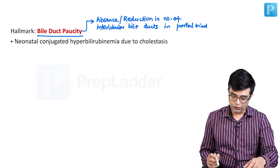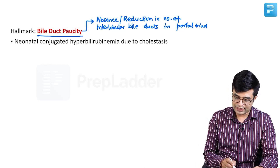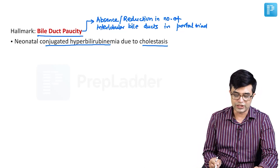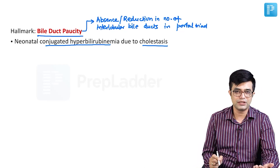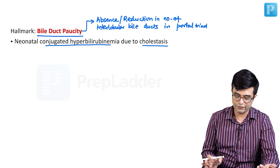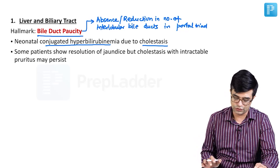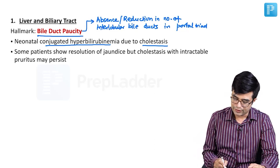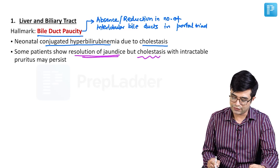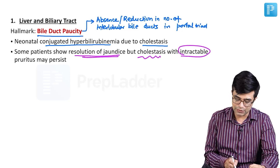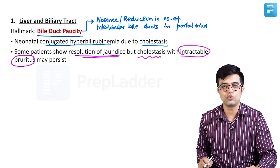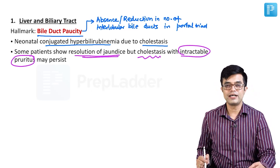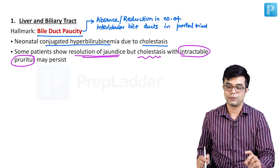In neonatal forms, patients show conjugated hyperbilirubinemia due to cholestasis. They will have a typical neonatal jaundice-like presentation which can mimic biliary atresia. Some patients will show resolution of jaundice as age advances, but cholestasis will persist and intractable pruritis may persist. In older children, it is pruritis which is the more troublesome symptom rather than jaundice.